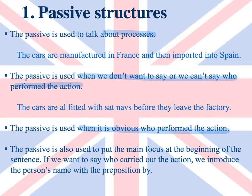We know that only the police arrest people. The passive is also used to put the main focus at the beginning of the sentence. If we want to say who carried out the action, we introduce the person's name with the preposition by. For example: this window was broken by someone in this class, and I want to know who.